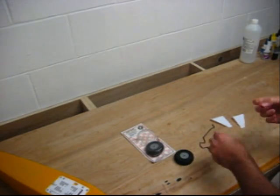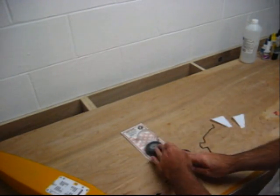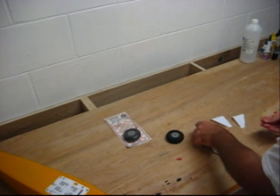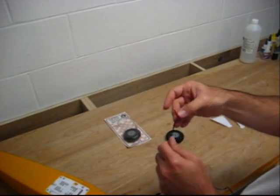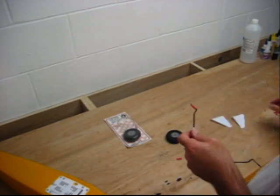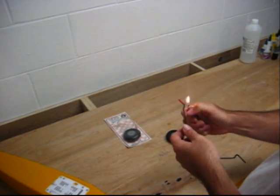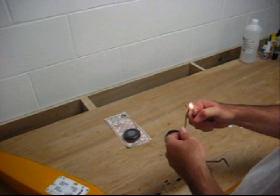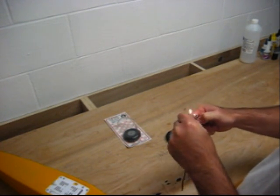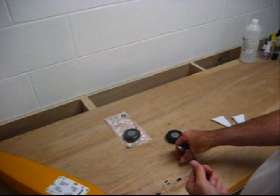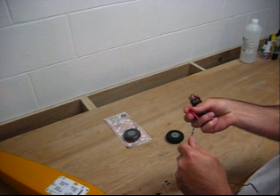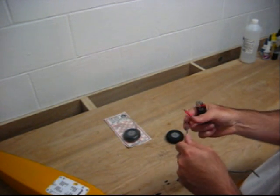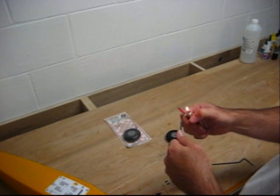I went ahead and have a couple pieces of shrink tube here. All I do is slip it over the axle, take your lighter, and shrink it down to the axle size. Then take your second piece, should just fit right over top of that, and shrink that one down.